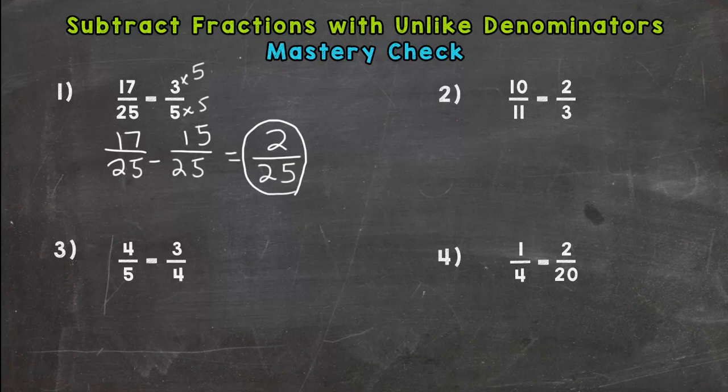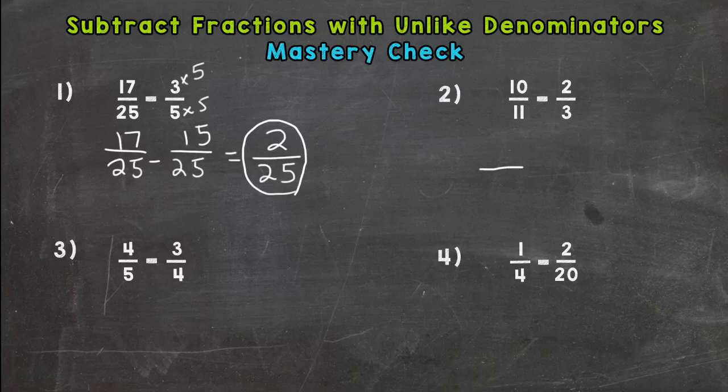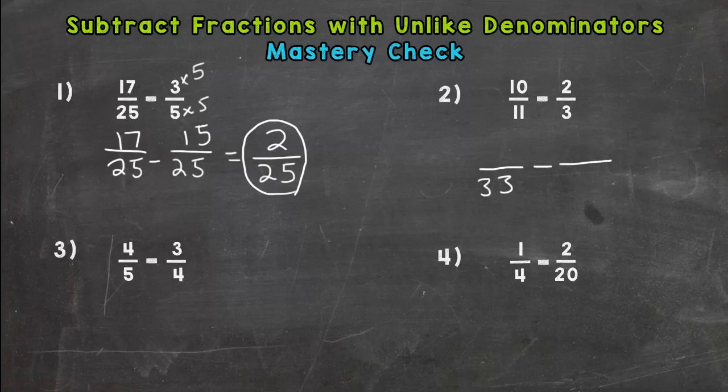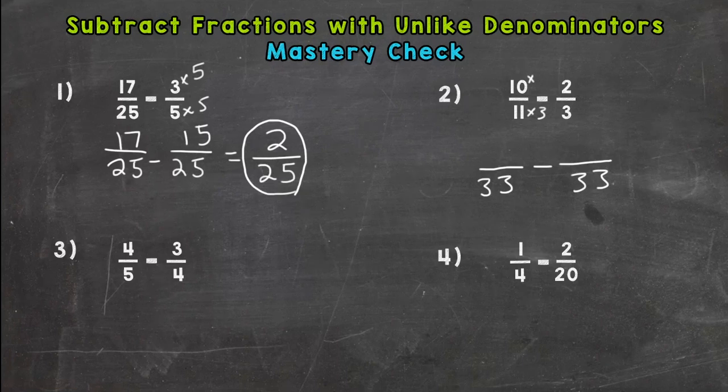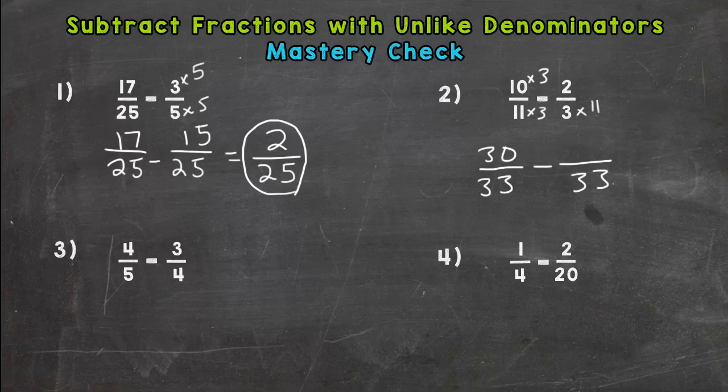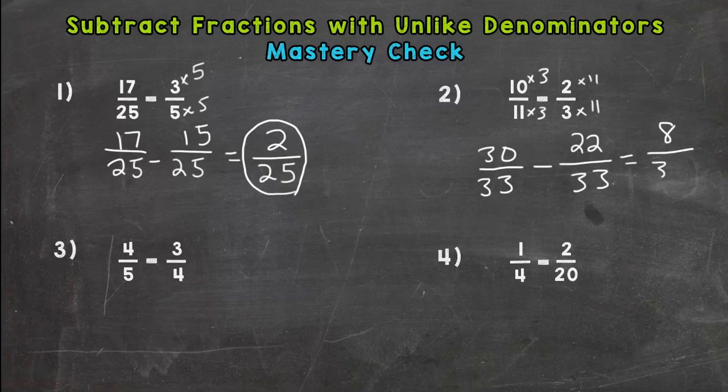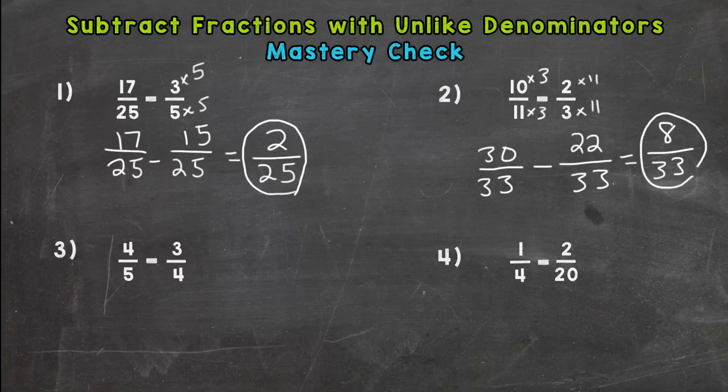Number two, you might have needed to write out your list of multiples to see where 3 and 11 meet first, and you should have gotten 33. Eleven times 3 is 33, ten times 3 is 30. Three times 11 is 33, two times 11 is 22. 30 minus 22 is 8 over 33. Only common factor between 8 and 33 is 1, so that means we are in simplest form and we are done: 8/33.